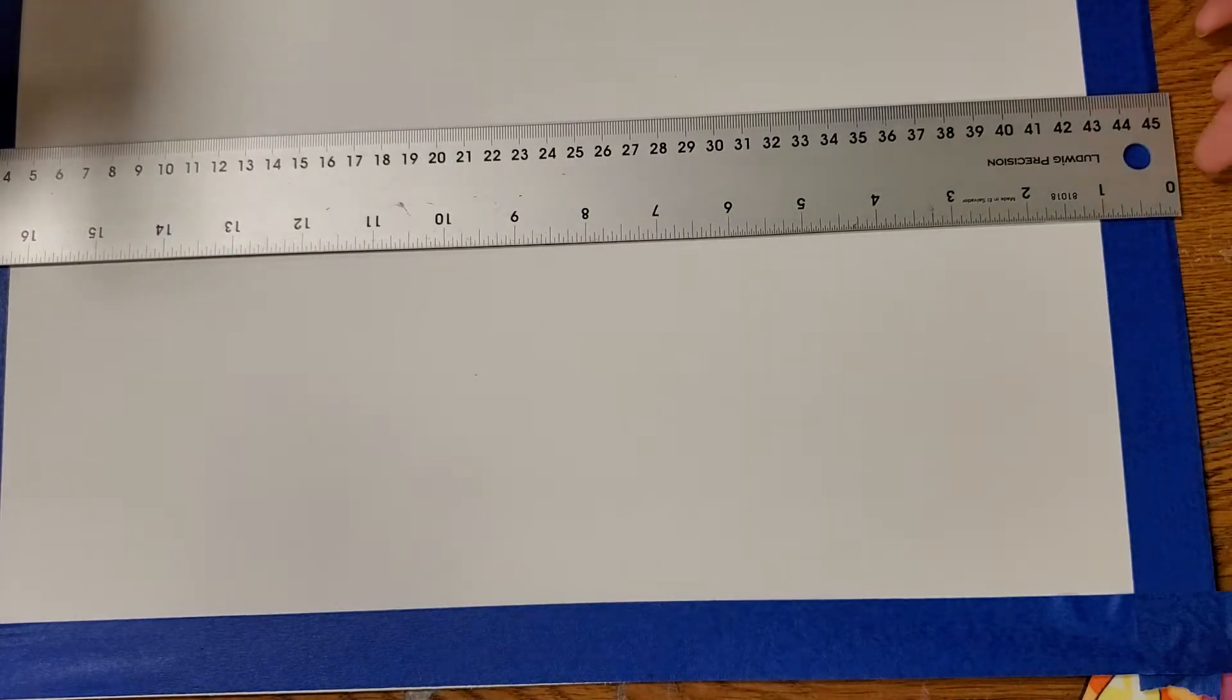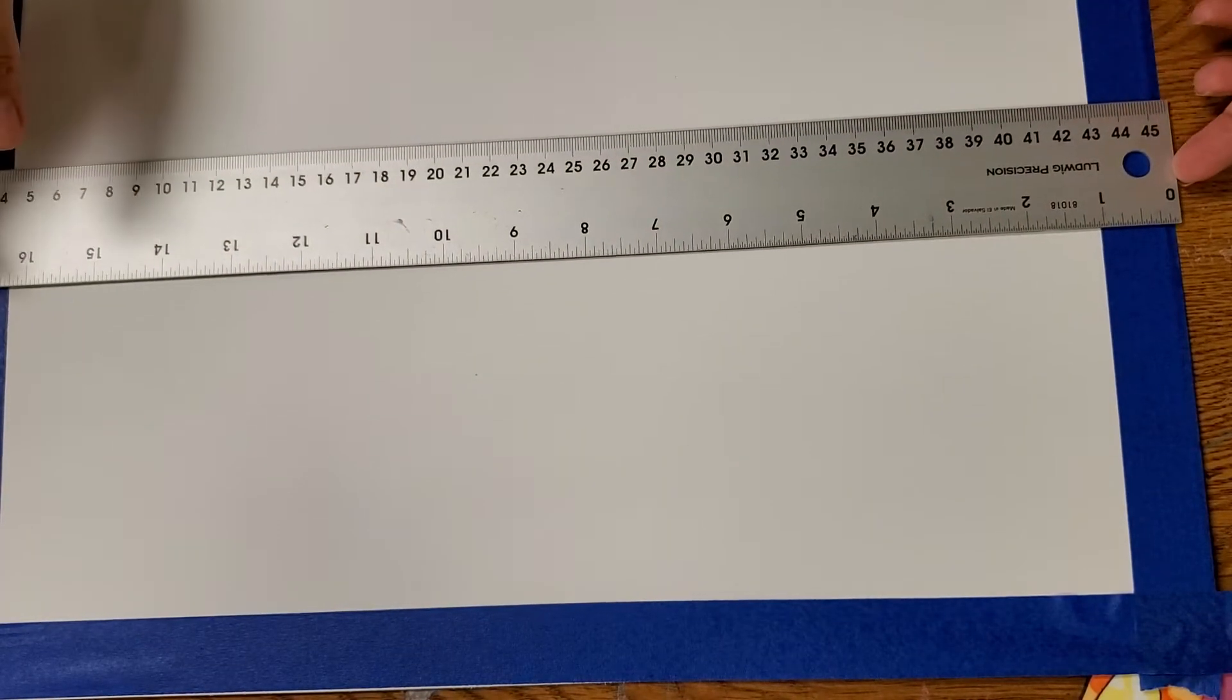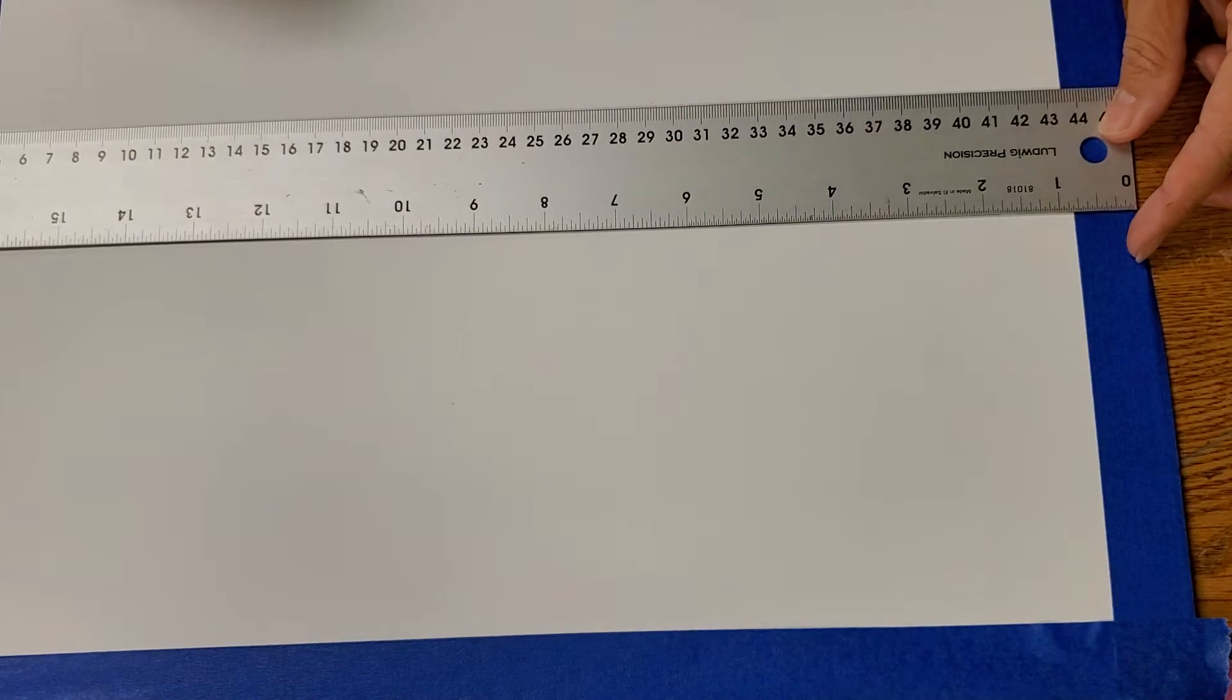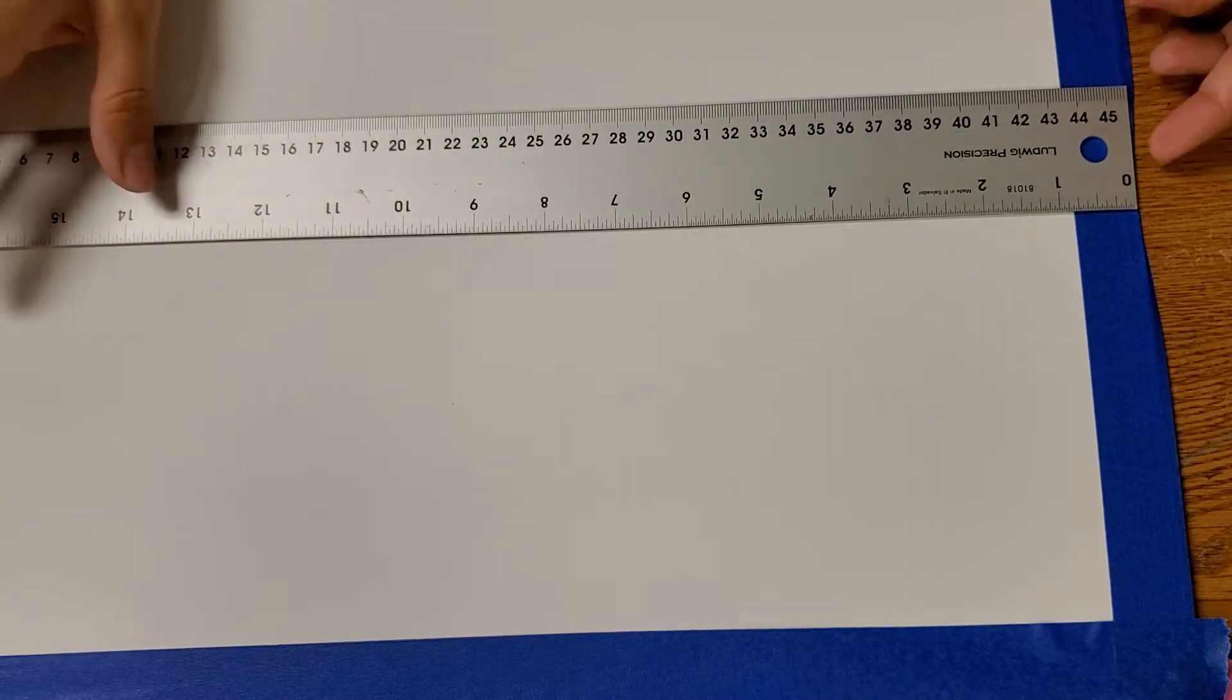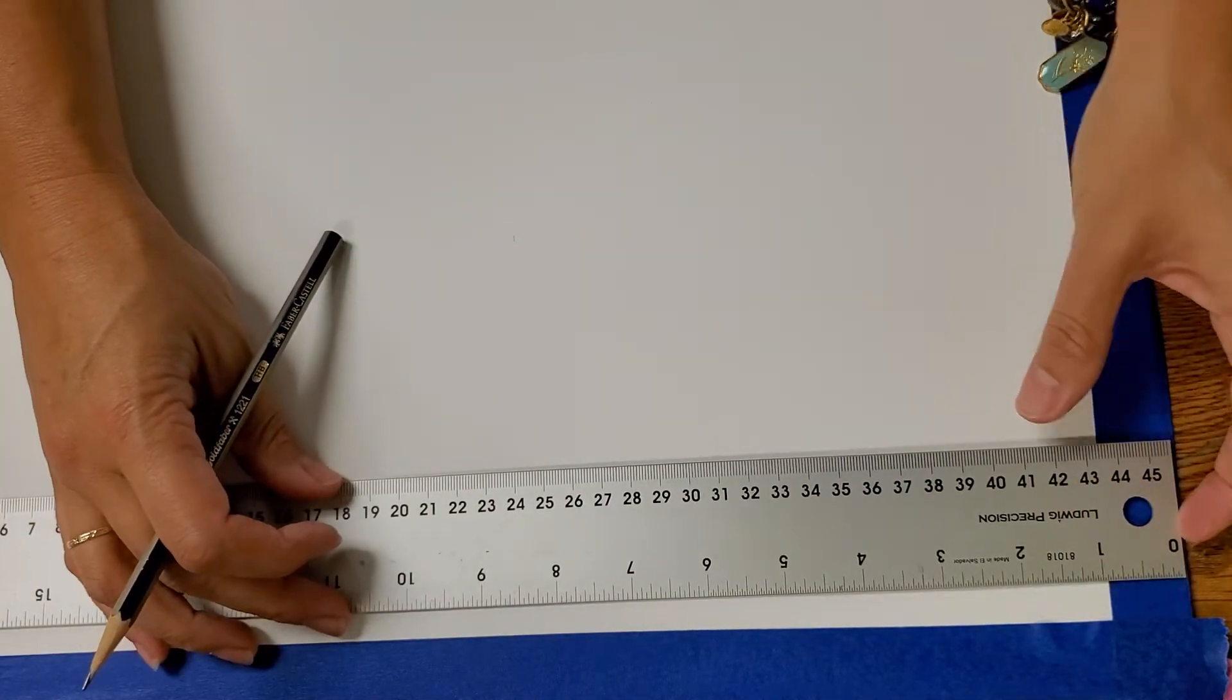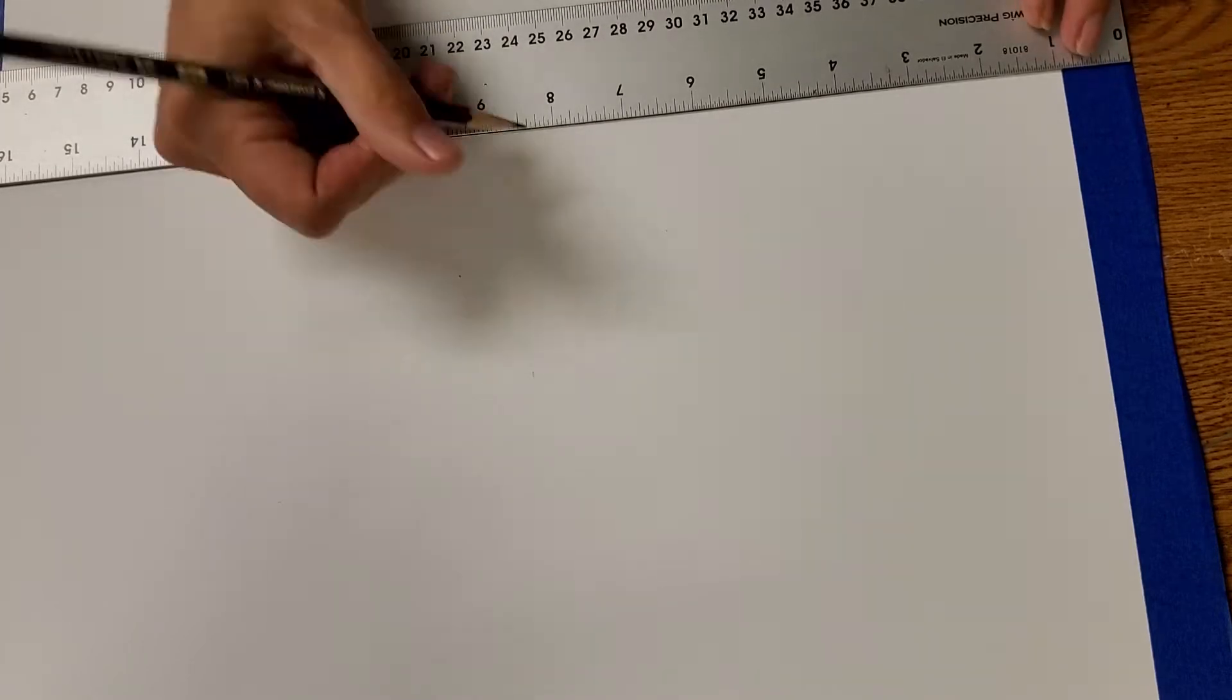Okay, so what you want to do is divide this in half. So you have to make sure your ruler is from end to end. It's very important. So the size of this paper is 17 inch by 14 inch. So 17 divided by 2 is 8.5 inches. So what you have to do is come, make a mark at your 8.5. Do it up here. Make sure you're going from end to end. Make a mark. Bring it down here. Make a mark.